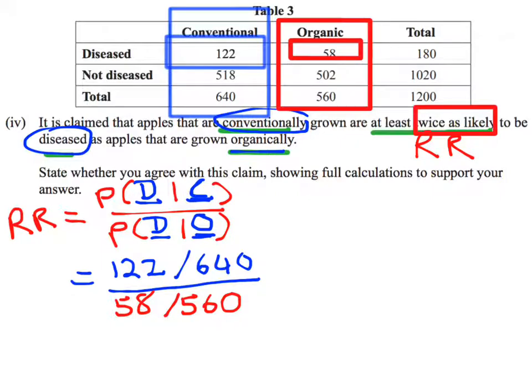Now I'm going to put that into my calculator, which gives me an answer of 1.84. Let's have a look at the question and see what it says. It's claimed that apples that are conventionally grown are at least twice as likely - so at least means more than or equal to. Is our answer at least twice as likely? No, it is not.